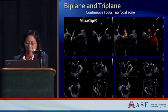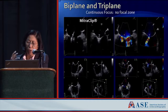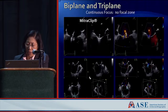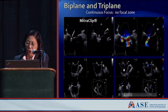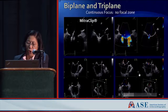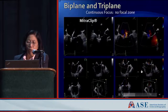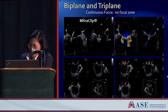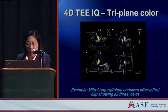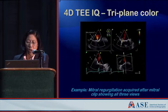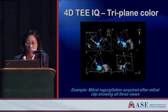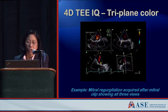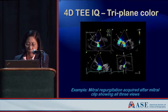Think about being able to look at three planes simultaneously. As we start to put the clip on, we really want to assess what's happening to the mitral regurgitation in multiple planes. This is a significant advantage — it allows us to see the orientation, the number of jets, and exactly where those jets occur simultaneously in three planes.